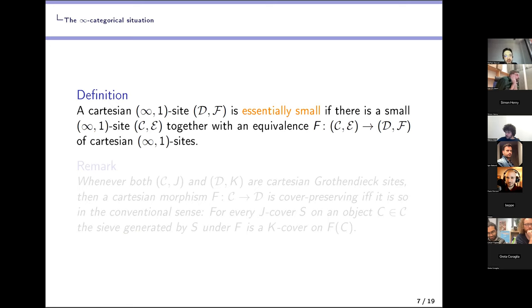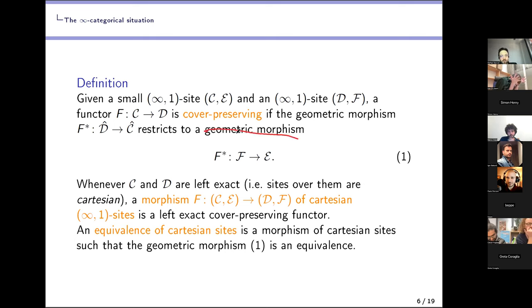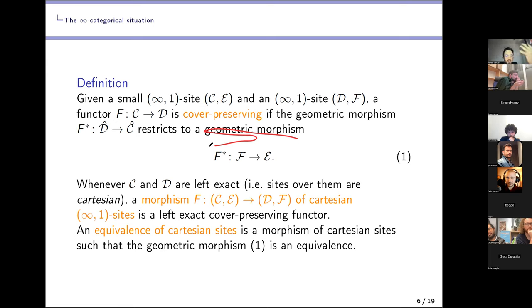A potentially large cartesian infinity one-site (D, F) is called essentially small if there is a small infinity one-site (C, E) together with an equivalence from (C, E) to (D, F). The direction is crucial: going from small to large corresponds to a geometric morphism, which has a left adjoint — but that left adjoint only exists when C is small, because it is defined via a left Kan extension indexed by C.